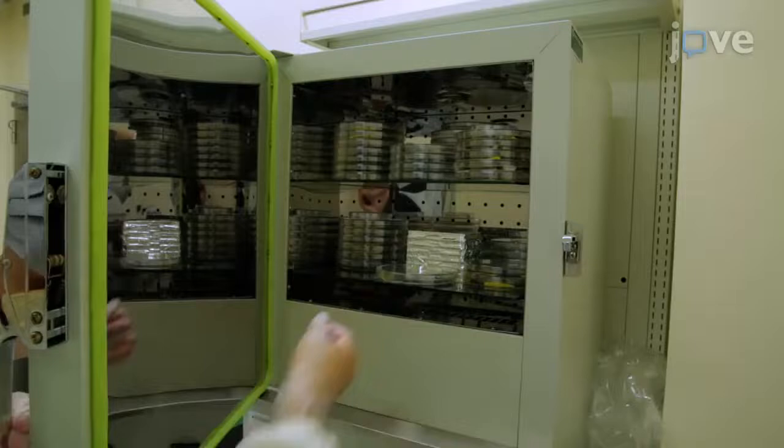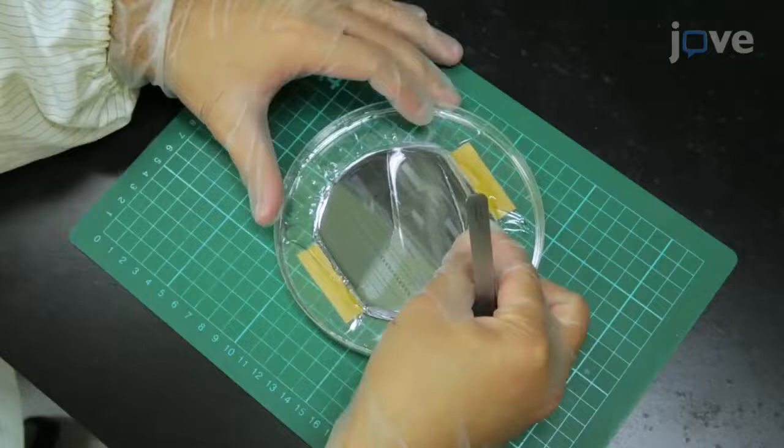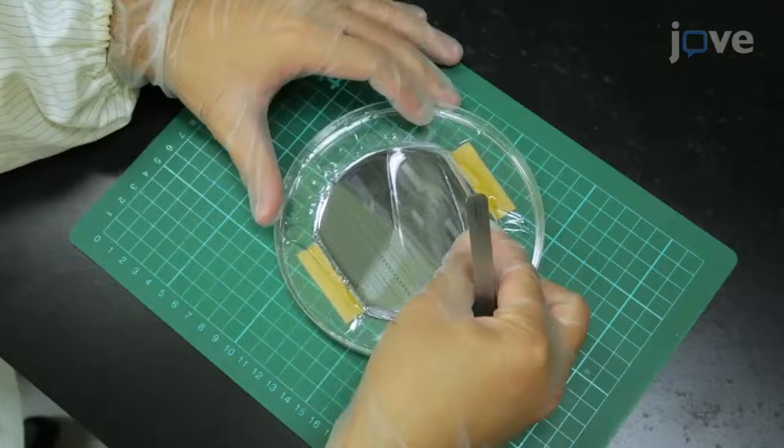Cure the PDMS by placing the dish in an oven at 65 degrees Celsius for 2 to 4 hours. When finished, remove the PDMS replica from the wafer mold and punch a 1.5 mm inlet and 0.5 mm outlet on the PDMS.